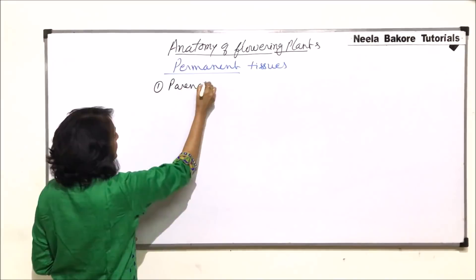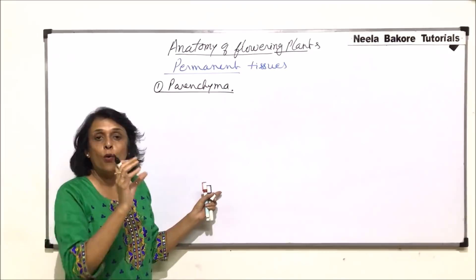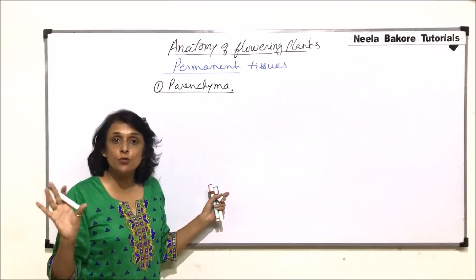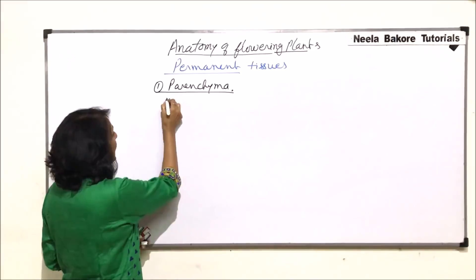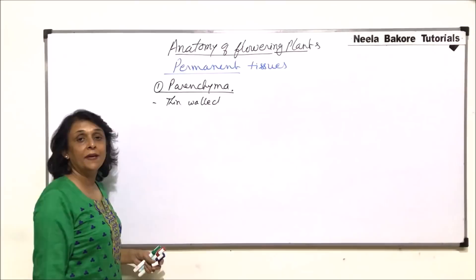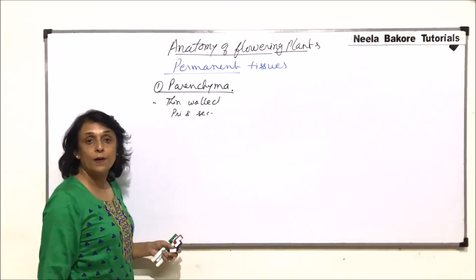First is parenchyma. In permanent tissue, we are talking about only the filling part because epidermal tissue will be taken up when we talk of tissue system. Here we are talking about the ground tissue cells which are parenchyma, collenchyma, and sclerenchyma. Parenchyma cells have thin walls — they have a primary and secondary wall.